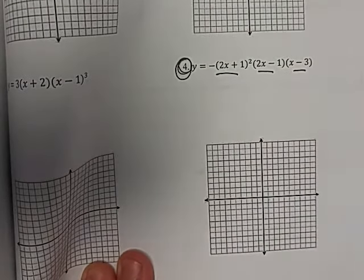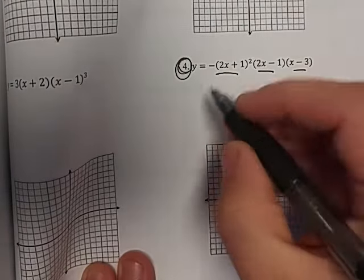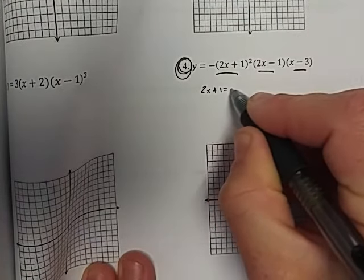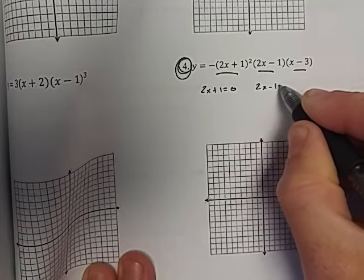We can see that we're going to have three of them. We're going to have one for each factor. Remember to find your x-intercepts, you set each factor equal to zero.